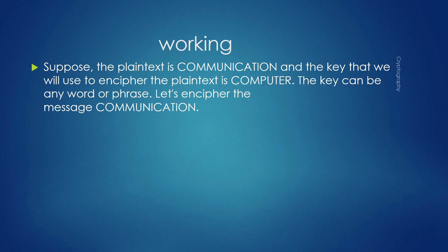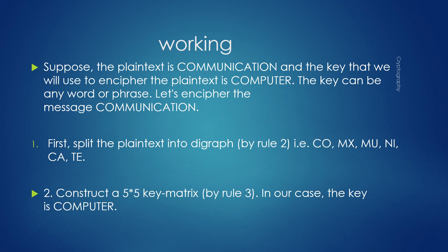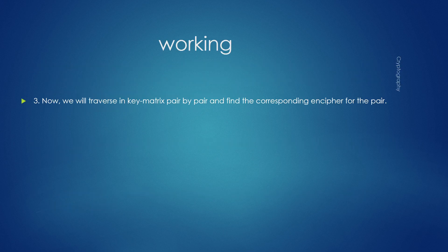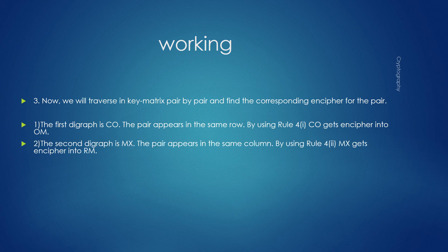Suppose the plaintext is 'communication' and the key is a chosen word or phrase. The plaintext is first split into digrams: CO, MX, MU, NI, CA, TE. A 5×5 key matrix is constructed from the key. Traversing the key matrix pair by pair: the first digram CO appears in the same row, so by the row rule it encrypts to OM.